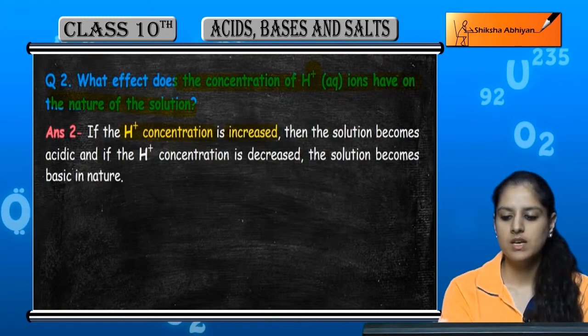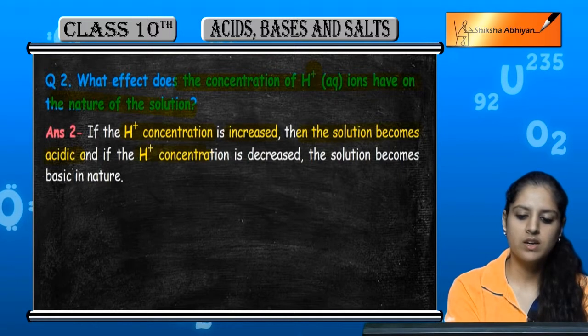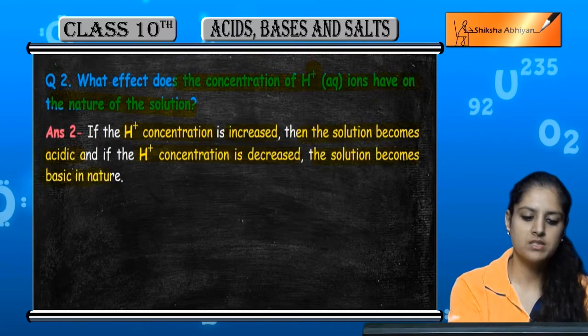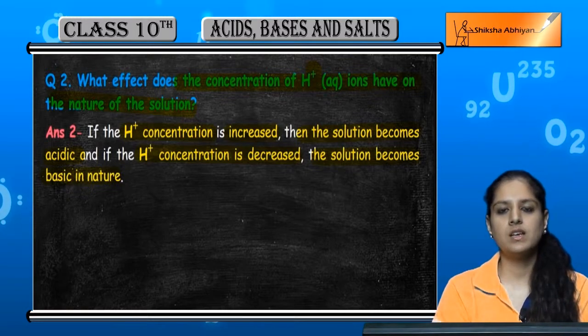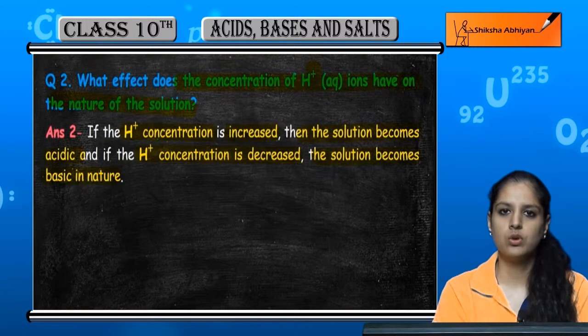If the H+ concentration is more, then the solution will be acidic. And if the H+ concentration is less, then the solution will be basic. So hydrogen ion concentration determines whether the solution is acidic or basic in nature.